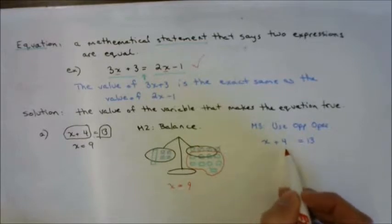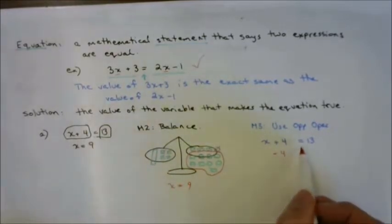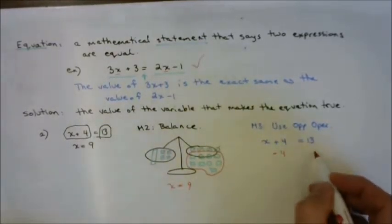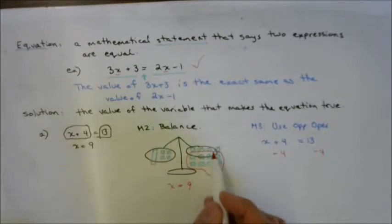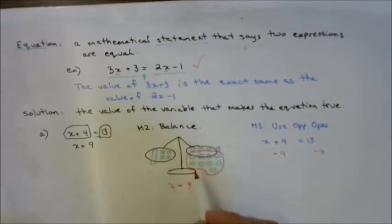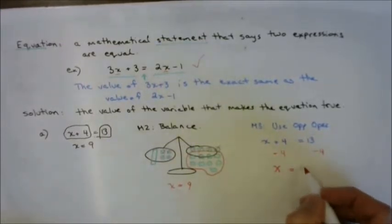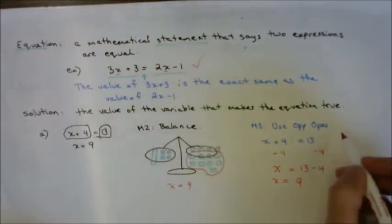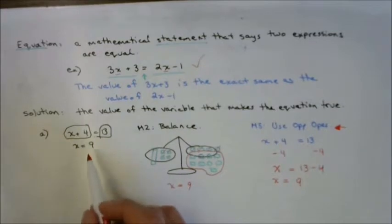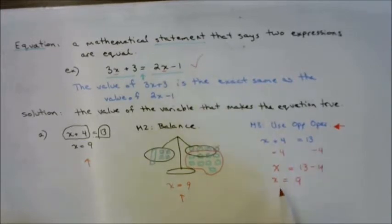Since it's a balance, I need to keep it equal — I must do the same thing on both sides. If I take away 4 blocks on the left, I also take away 4 on the right or the scale tips. So x plus 4 minus 4 is just x, and 13 minus 4 is 9. We're using inspection and balance just so we understand the concept before applying opposite operations all the time.